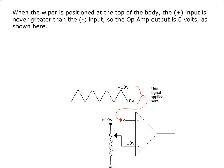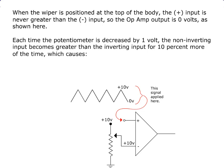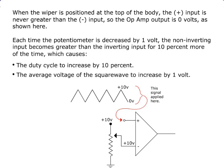When the wiper is positioned at the top of the body, the positive input is never greater than the negative input, so the op amp output is 0 volts as shown here. Each time the potentiometer is decreased by 1 volt, the non-inverting input becomes greater than the inverting input for 10% more of the time, which causes the duty cycle to increase by 10%, and the average voltage of the square wave to increase by 1 volt.